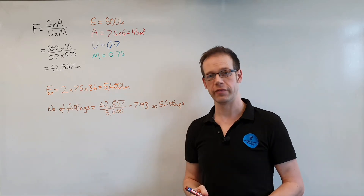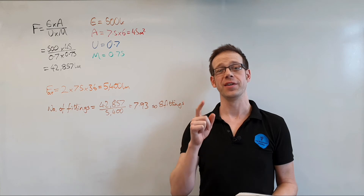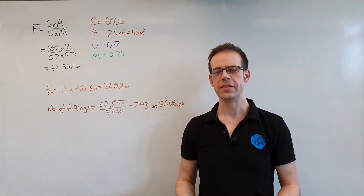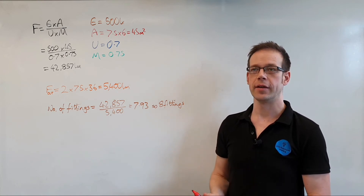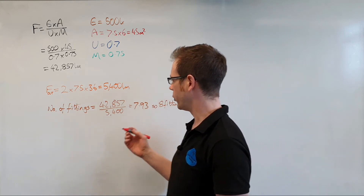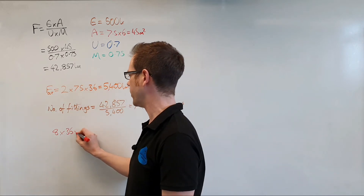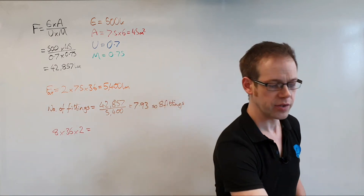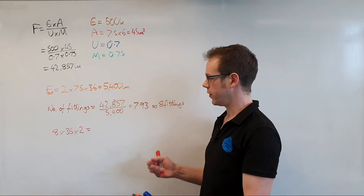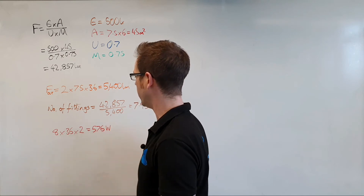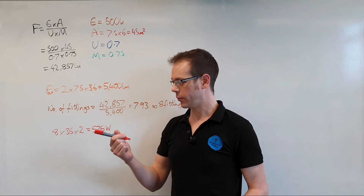We've answered the first part of the question — we need eight light fittings. The next part asks how much current those fittings will draw. First we find the total power: eight fittings, times 36 watts per tube, times two tubes, gives us 576 watts. So this lighting circuit will dissipate 576 watts.